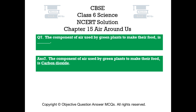Question number 7: The component of air used by green plants to make their food is? Answer number 7: The component of air used by green plants to make their food is carbon dioxide.